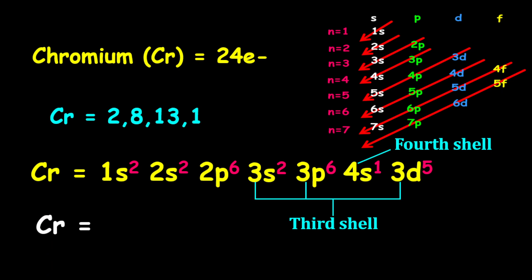Now, for the shortened electron configuration, we will write this as argon, followed by 4s1, then we have our 3d5.